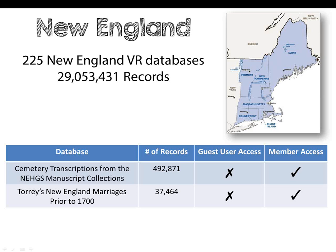We will now have an overview of the variety of databases you can find on AmericanAncestors.org to assist you with New England vital records. We offer 225 New England vital record databases online, combined totaling over 29 million individual records. A couple of databases you may be interested in searching combine all of the New England states — this includes over 490,000 gravestone inscriptions from New England cemeteries, and the well-respected compilation of marriages prior to 1700, known as Torrey's New England Marriages.